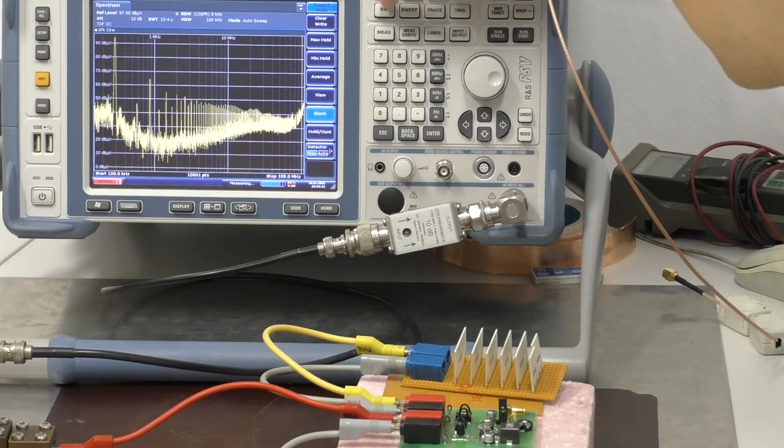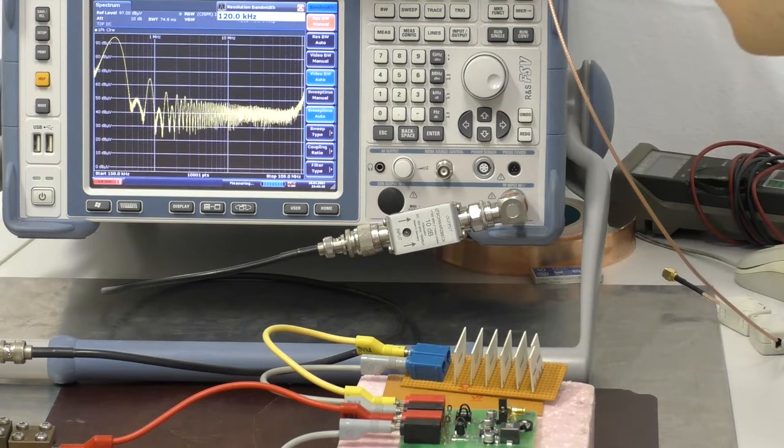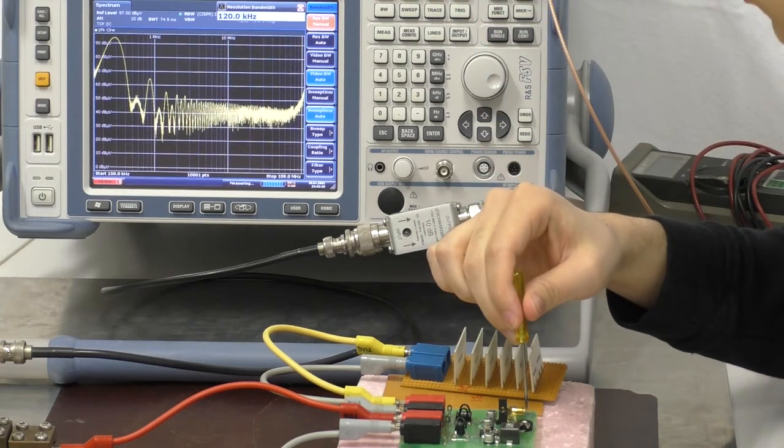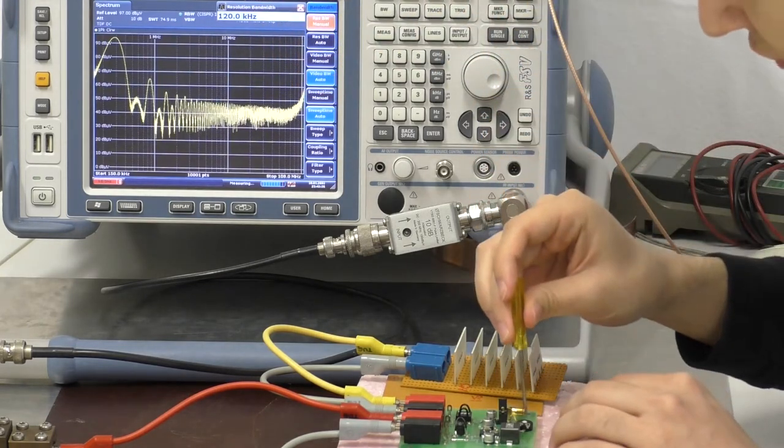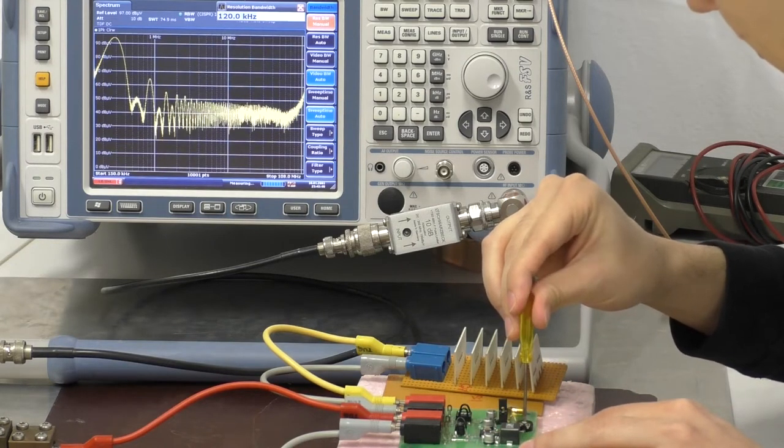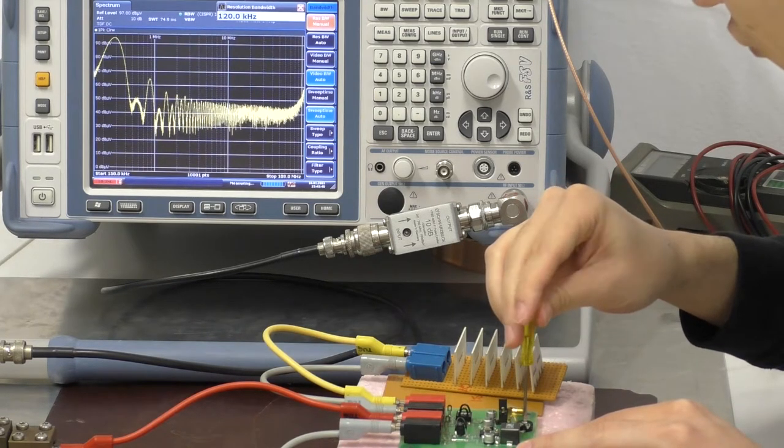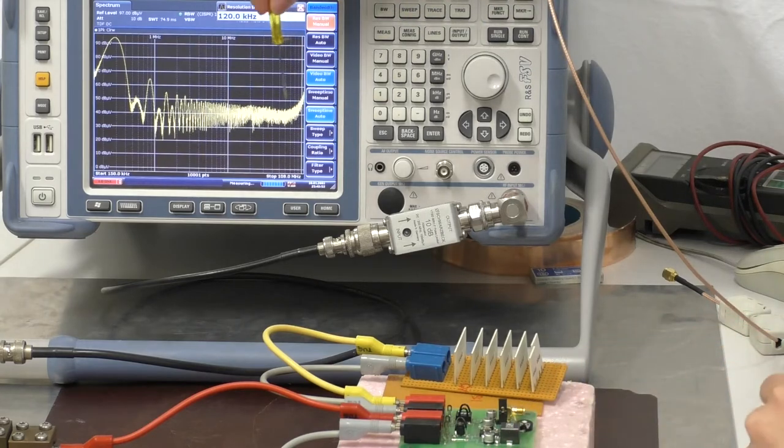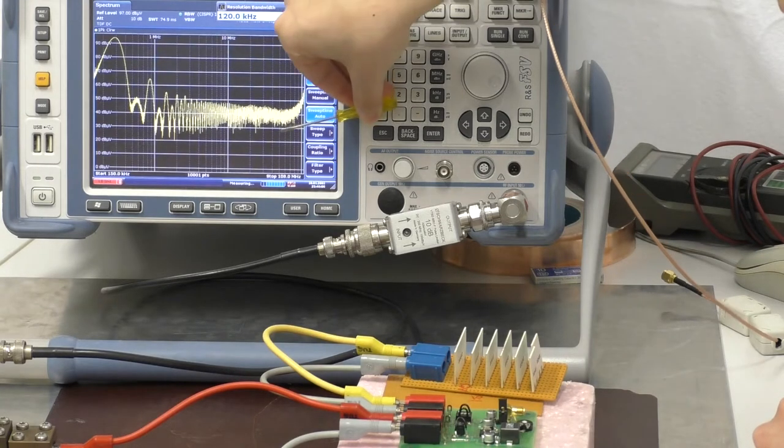So let's change our resolution bandwidth here and increase it to 120 kilohertz. So the sweep time just takes 75 milliseconds. And now when I am increasing the resistance the emissions will go down. But I will just do it for a short time. So now let's increase it. And now decrease it. Once again I will increase the resistance. And decrease it once again. So you have seen here that especially on the high frequency range we were able to reduce those emissions here.